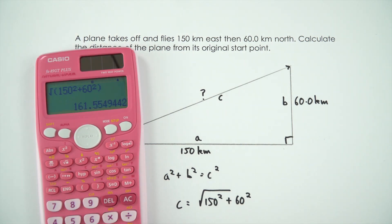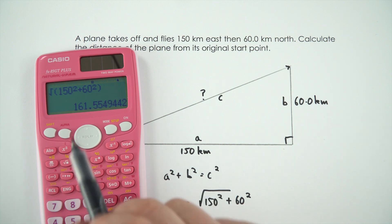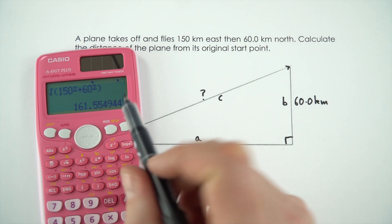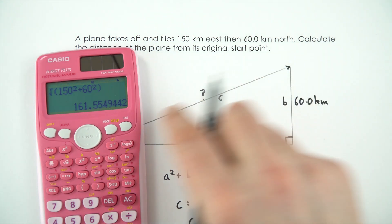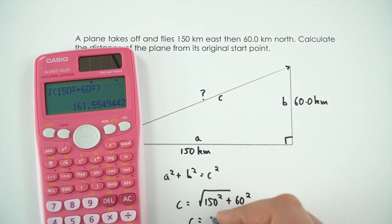And when I put the numbers into my calculator this gives an answer of 161.55. So the answer of how far that plane is now from its original starting position is 162 kilometres.